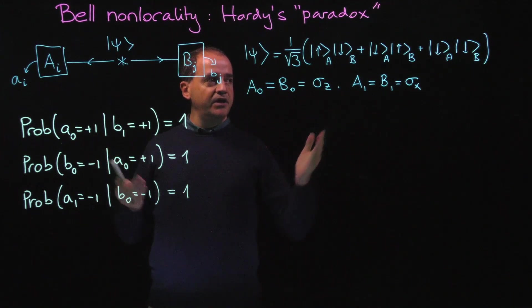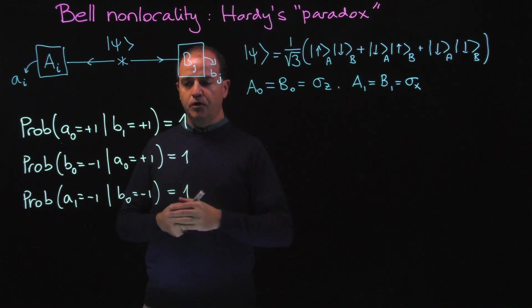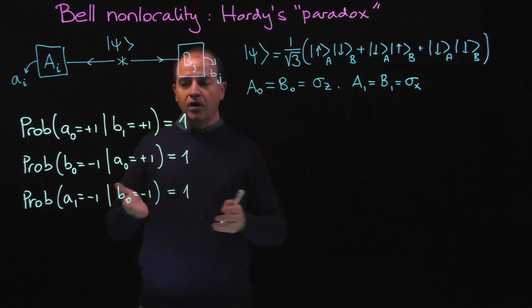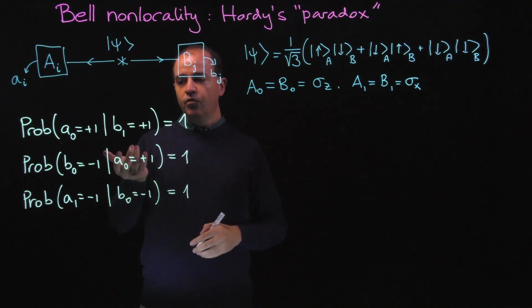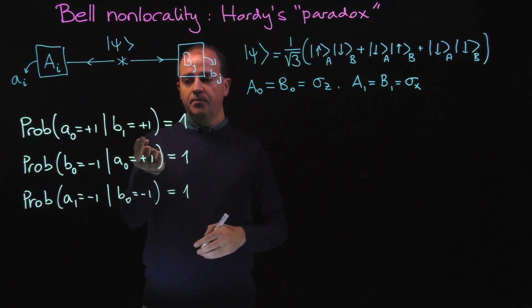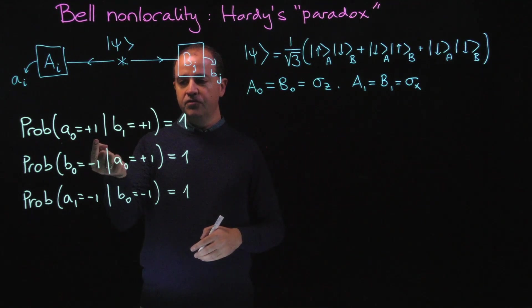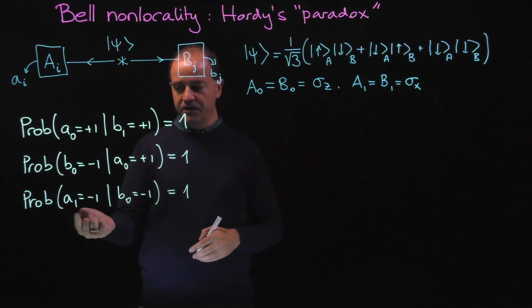If you do the calculations, you find that these probabilities are true for this state. I'll just read one of them; you can read the others. For instance, whenever you find B1 equals plus 1, then Alice must have found A0 equals plus 1, and so on for the other combinations.